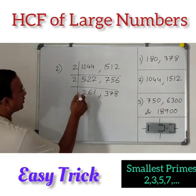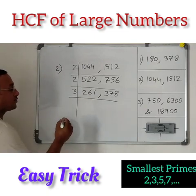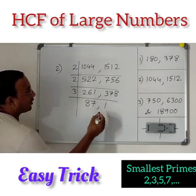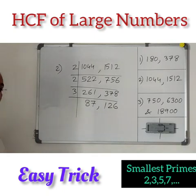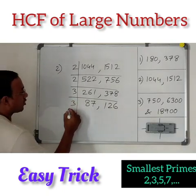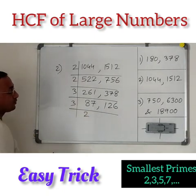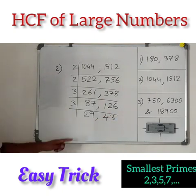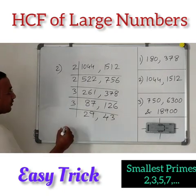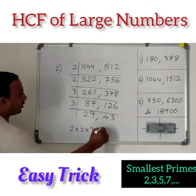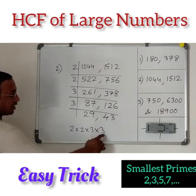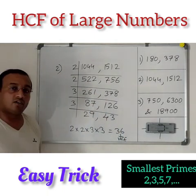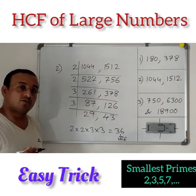Does 3 divide both? Yes. 261 divided by 3 goes 87 times, and 378 divided by 3 gives 126. Again 3 divides both: 87 divided by 3 is 29, and 126 divided by 3 is 42. No other prime divides both 29 and 42 in common, so we stop. Multiply what we used: 2 into 2 into 3 into 3. That is 4 times 9, which equals 36. So the HCF of 1044 and 1512 is 36.